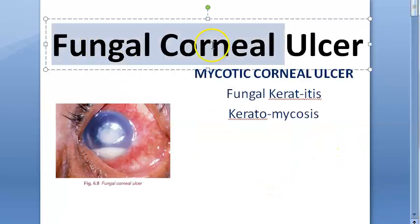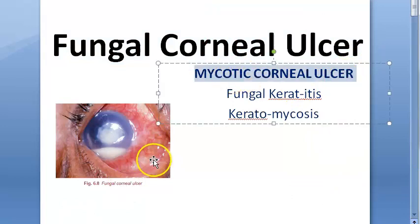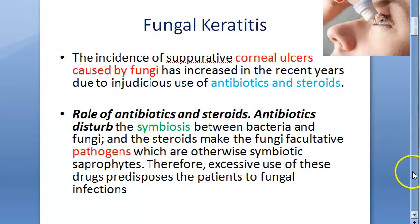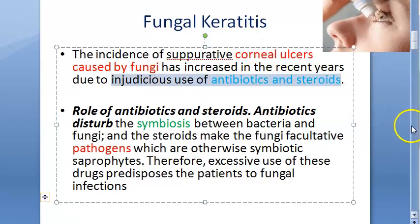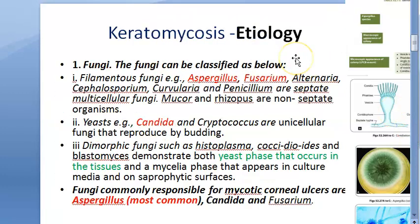Quick recap: fungal corneal ulcer is also called mycotic corneal ulcer, fungal keratitis, and keratomycosis. It is a corneal ulcer caused by fungi, which can result from injudicious use of antibiotics and steroids — disrupting symbiosis and turning fungi into pathogens.